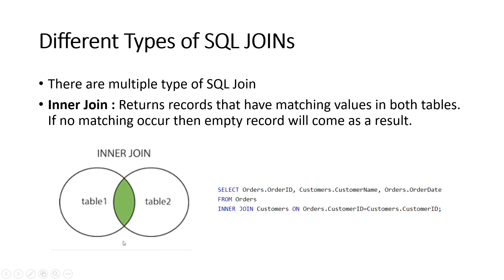The INNER JOIN query: table 1 is orders and table 2 is customers. The condition after the ON keyword is orders.customer_id equals customers.customer_id. If both match, then it gives us the order ID, customer name, and order date. Let's see this query practically in MySQL phpMyAdmin.